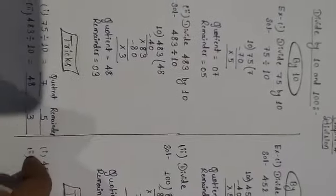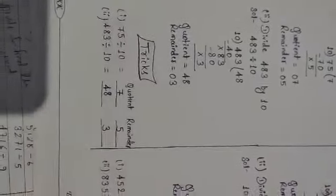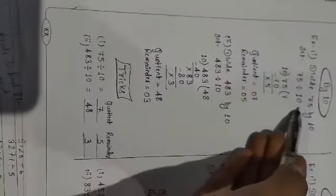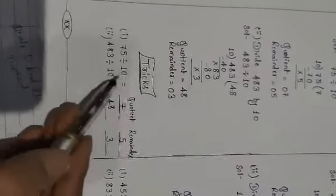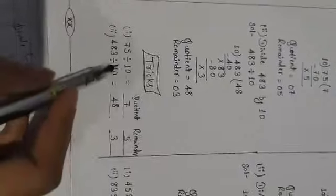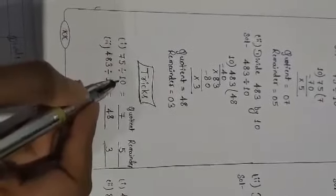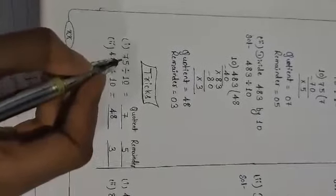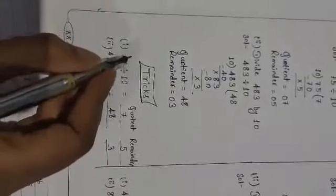I discussed this and even the trick also. Let me remind you what was the trick and how we can write this in the easiest form. Like the question is 75 divided by 10, I just written the same question you can see. So what you have to do, as in 10 how many zeros are there? One zero.